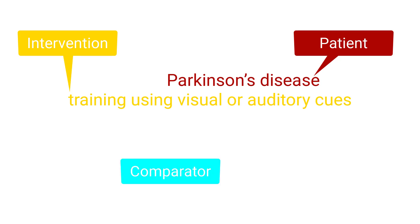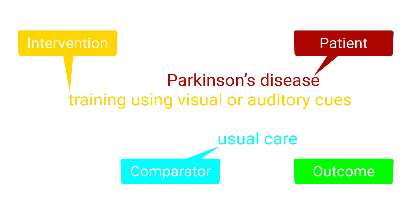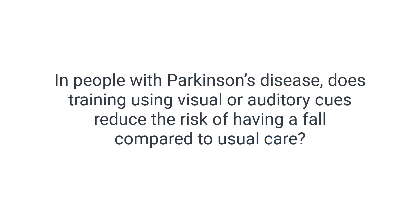Now let's think about the C component of the PICO format, which is for the comparator intervention. What do we want to compare our intervention with? Let's compare it to usual care. And for the outcome, think about something people with Parkinson's disease would find important enough to seek physiotherapy for — such as falling. So our PICO question is: in people with Parkinson's disease, does training using visual or auditory cues reduce the risk of having a fall compared to usual care?